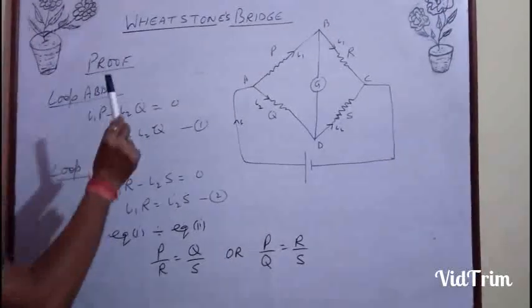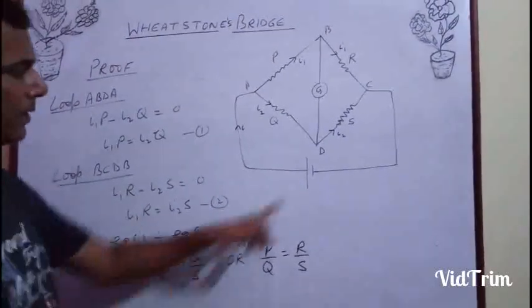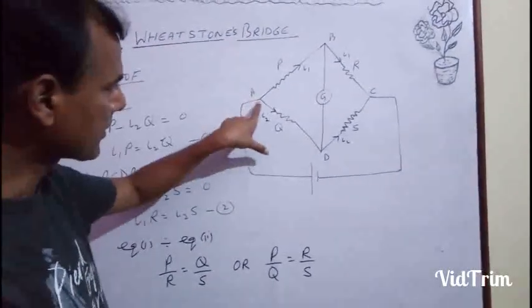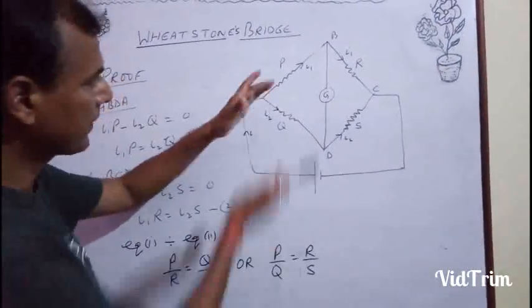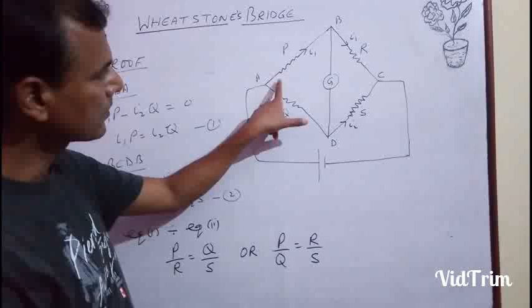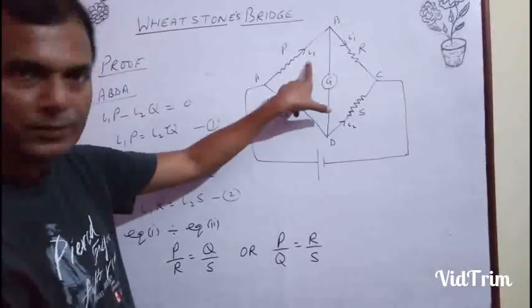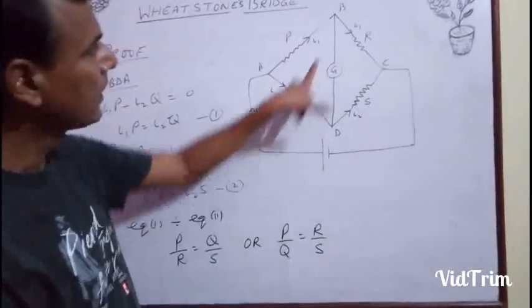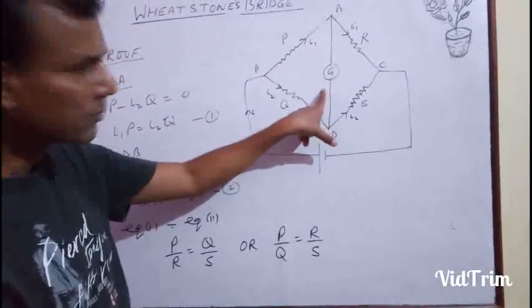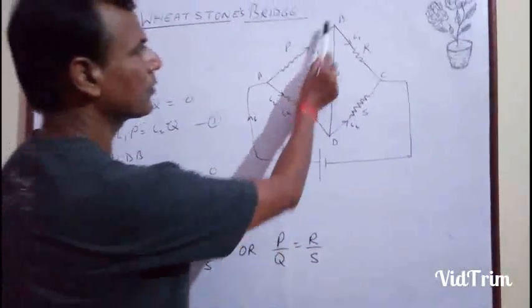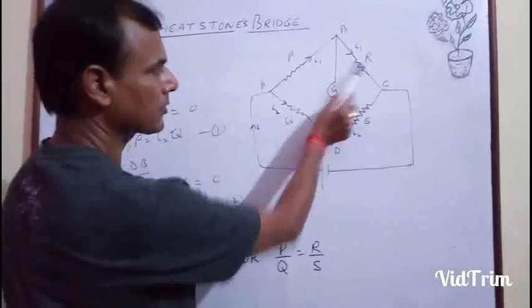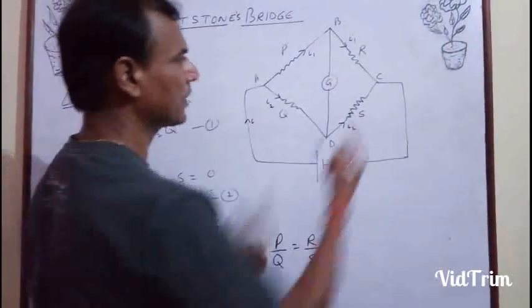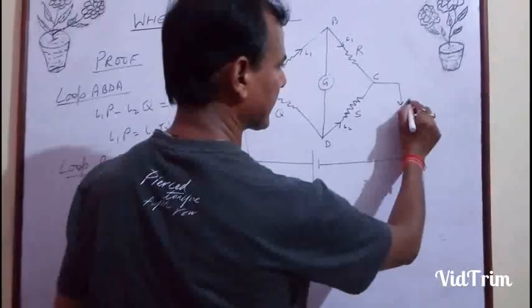Proof of Wheatstone bridge. Suppose the current I starts flowing in the circuit. At junction A, it will distribute. Suppose along one side, current I1 goes, and along the other side, current I2 flows. As no current passes through the galvanometer, I1 will go through P and R also, and I2 will go through Q and S. Ultimately, both will combine at C, and we get I.